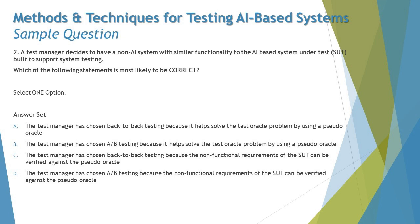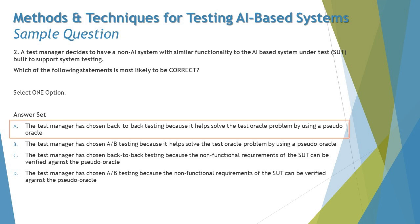They are essentially testing whether you know the difference between A/B testing and back-to-back testing, and whether you can provide the right justification. Option D says the test manager has chosen A/B testing because the non-functional requirements of the SUT can be verified against the pseudo oracle — that is absolutely not correct, as it is an example of back-to-back testing, and the non-functional characteristics of the pseudo oracle are likely to be different. The correct answer is A: back-to-back testing, which solves the test oracle problem using a pseudo oracle.